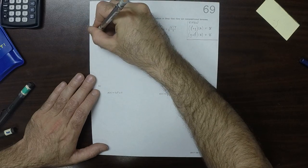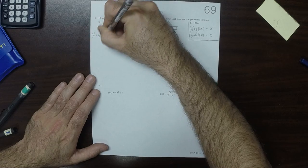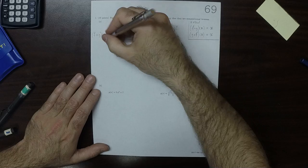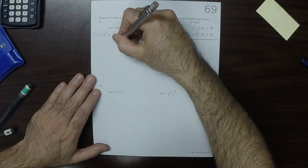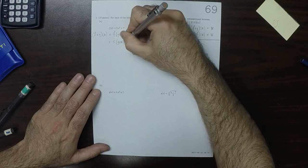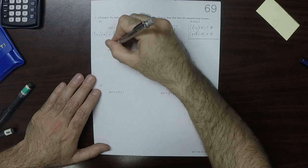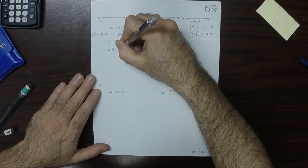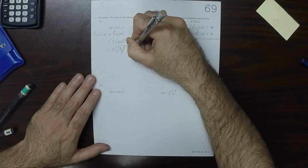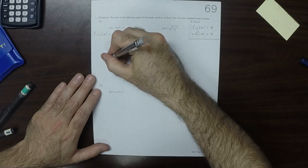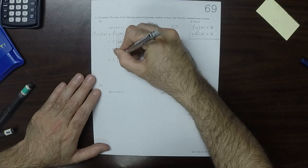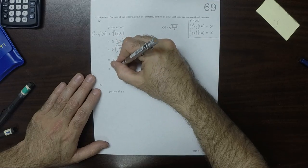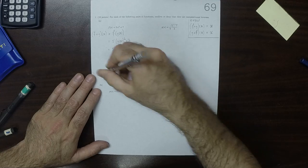So let's do f circ g evaluate at x. Well that's f of g of x, and that is 5 times g of x squared plus 7. And that is 5 times the square root of x minus 7 over 5, square that, and then add 7. Well the square and the square root in that order cancel. So then this is 5 times x minus 7 over 5 plus 7. The 5s cancel, so x minus 7 plus 7, the 7s cancel, so this is x.